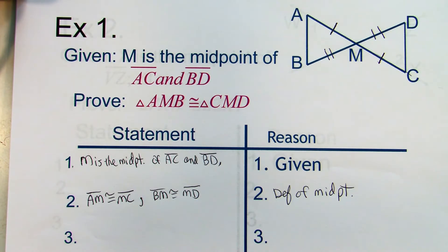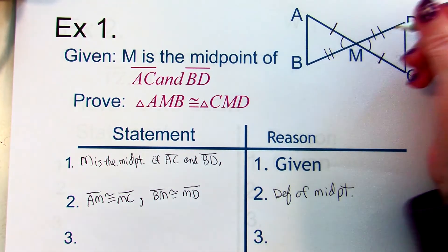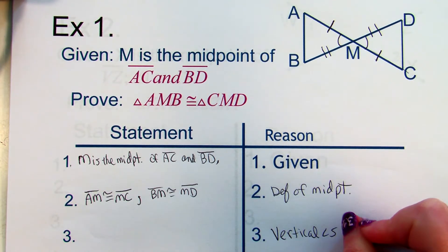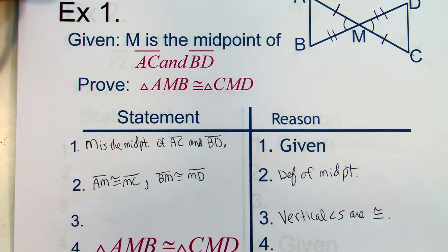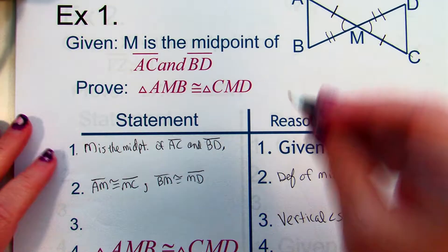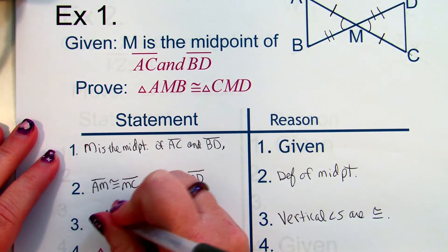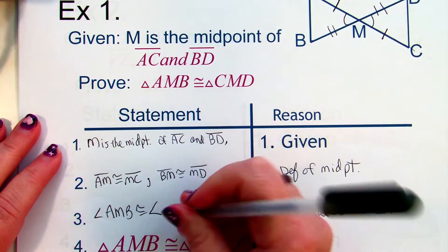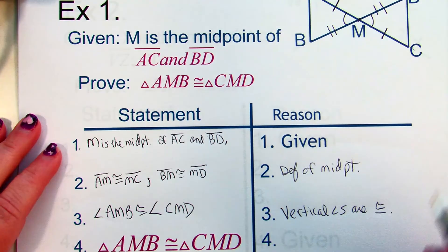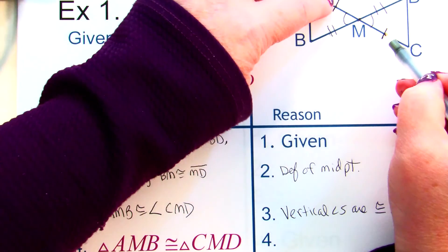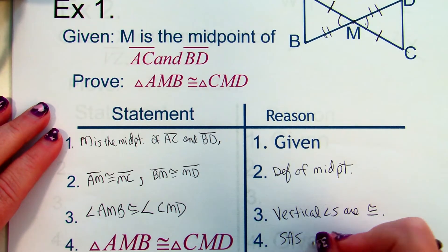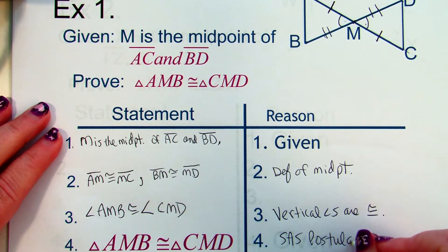So we have side, side — does anyone see any angles that could be congruent? How about these? What kind of angles are those? Vertical angles! Vertical angles are congruent, so angle AMB is congruent to angle CMD. M has to be the middle letter because it's the vertex. So now what method is this? Side-angle-side — SAS postulate.